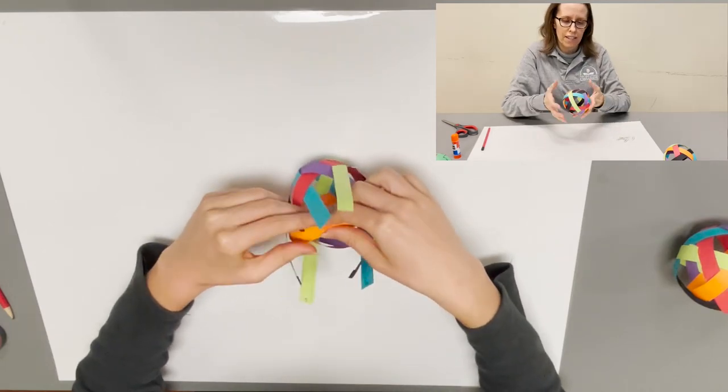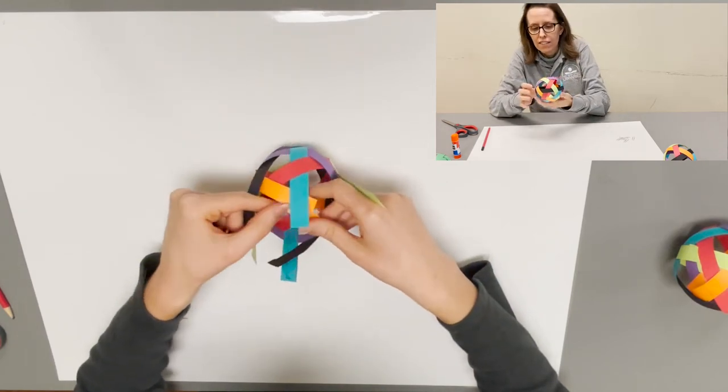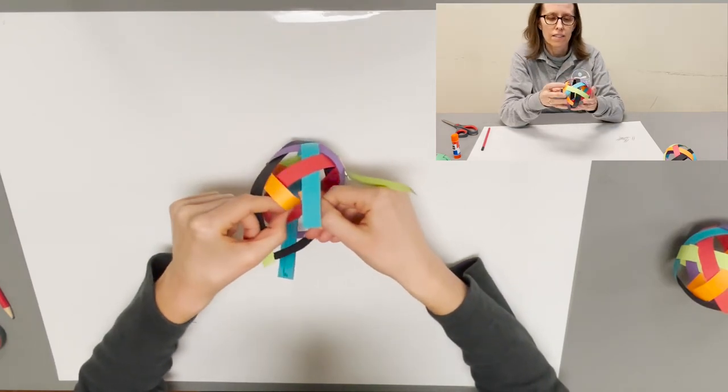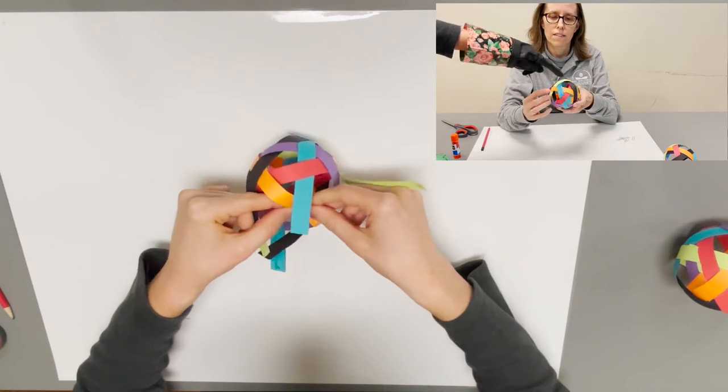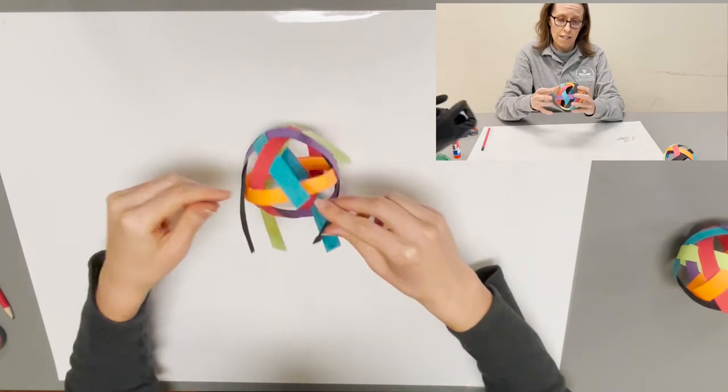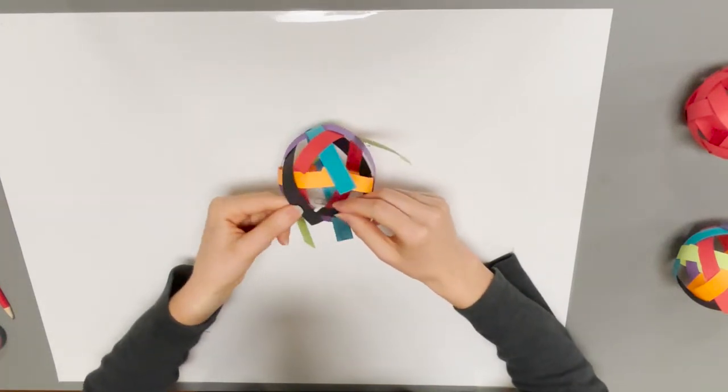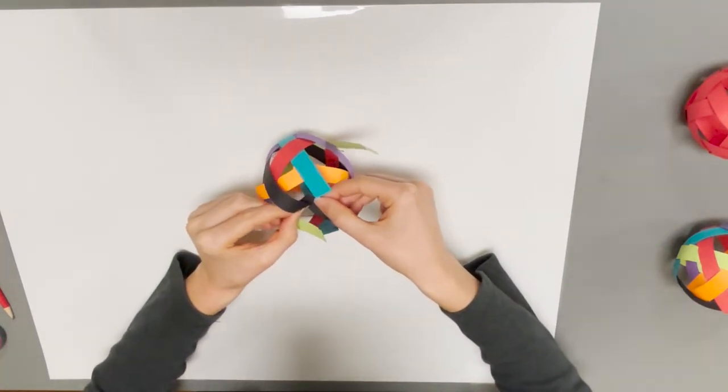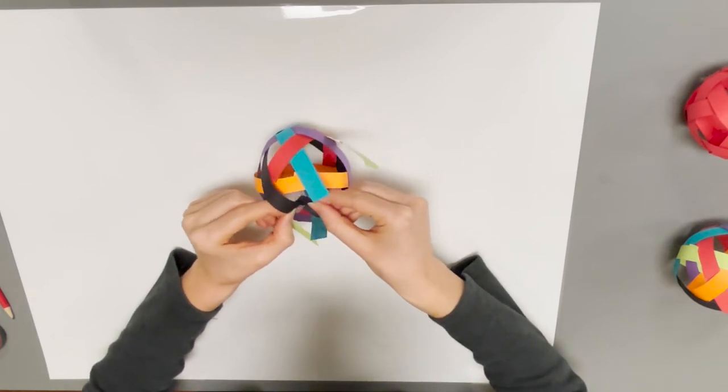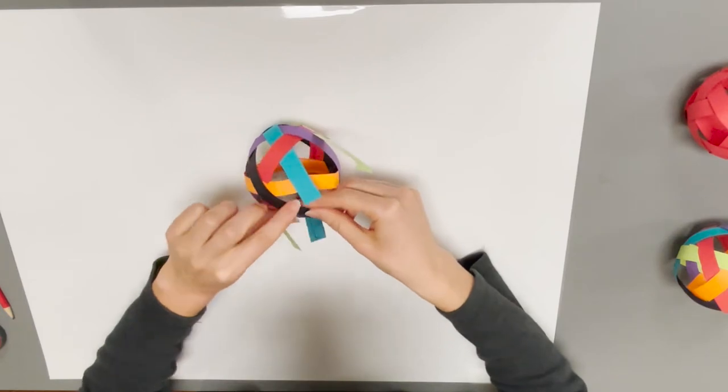As soon as I get the orange one together, I'll put the black one back. Black together with the tabs going on the inside of the circle.